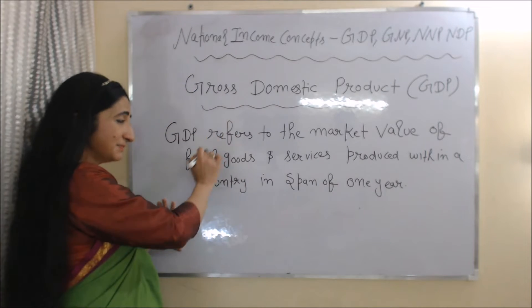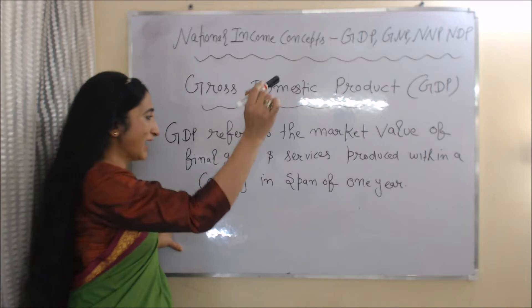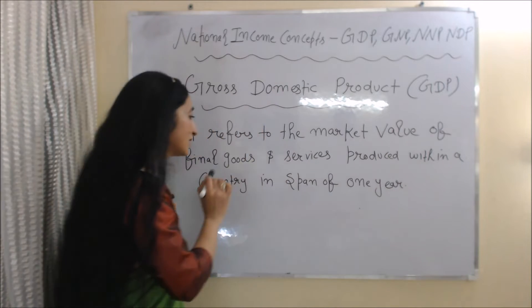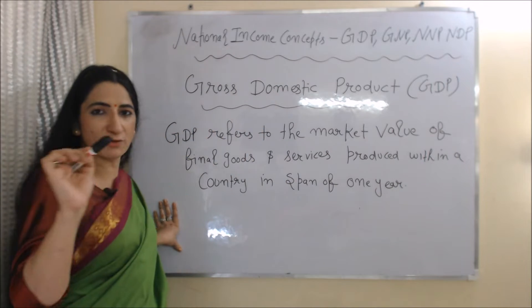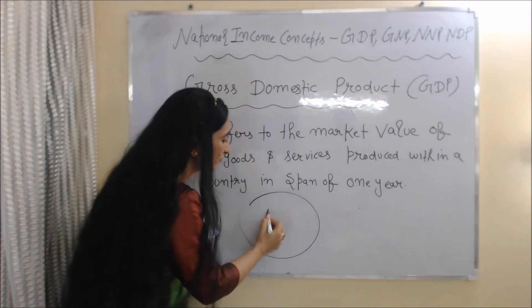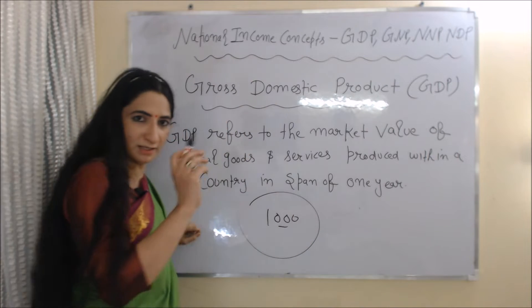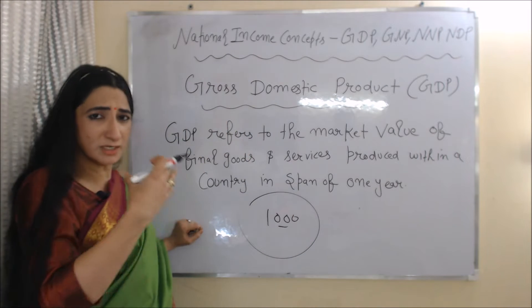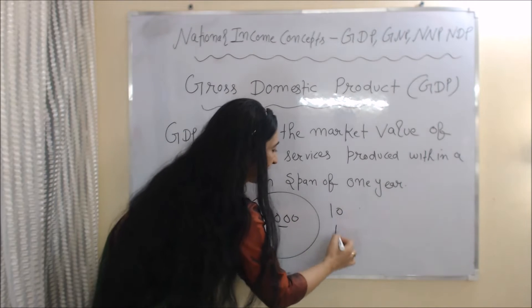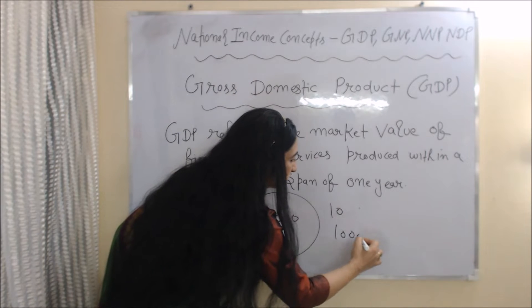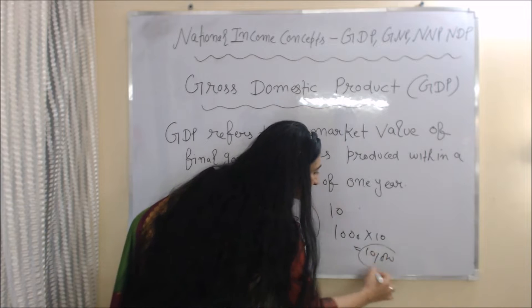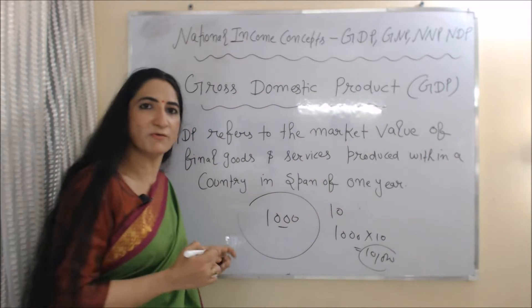So, GDP refers to the market value of final goods and services produced in a country in a span of one year. For example, in one year 1000 total goods are produced in a country, and assuming price per unit is 10, then 1000 multiplied by 10 equals 10,000. This 10,000 is the GDP of the country.